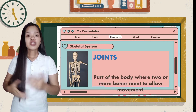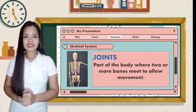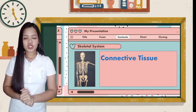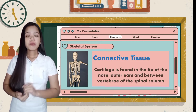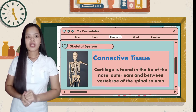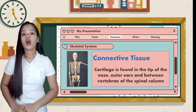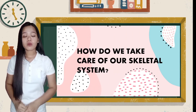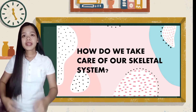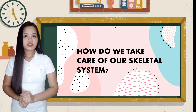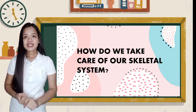A joint is the part of the body where two or more bones meet to allow movement. Cartilage is found in the tip of the nose, outer ears, and between vertebrae of the spinal column. Cartilage cushions the area where two or more bones usually meet. To take care of our skeletal system, we need to get enough calcium to make our bones strong by eating foods such as milk, yogurt, cheese, and dairy foods.